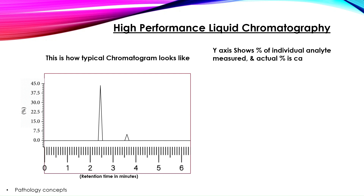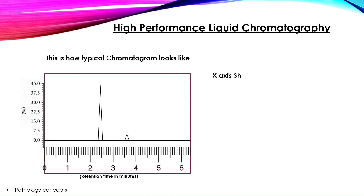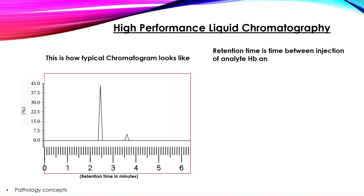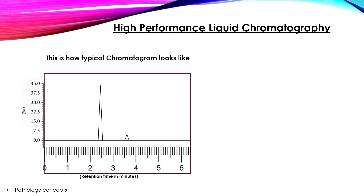The y-axis of the graph shows the percentage of individual analyte measured, and the actual percentage of analyte is calculated by the area covered under the spike. The x-axis shows the retention time. The retention time is the time between injection of analyte Hb and detection of analyte Hb.